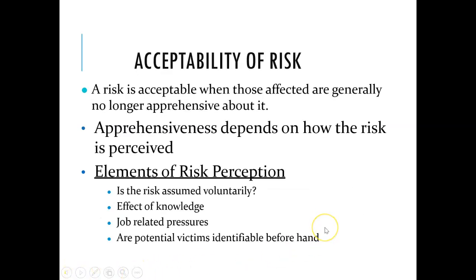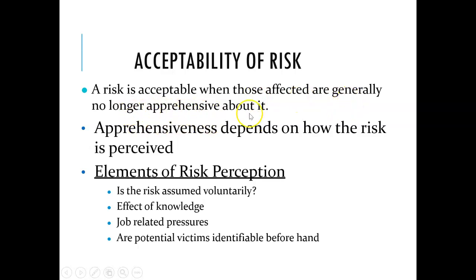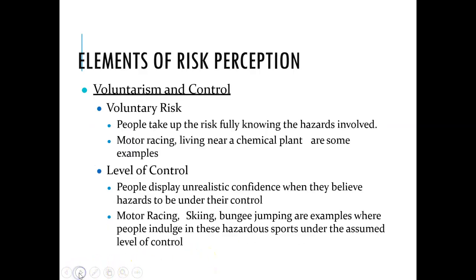Regarding the acceptability of risk, it should not harm humans. Risk is acceptable when those affected are generally no longer apprehensive about it. Apprehensiveness depends upon how the risk is perceived. The elements of risk perception include the value of knowledge, job-related pressures, or potential victim-related elements.